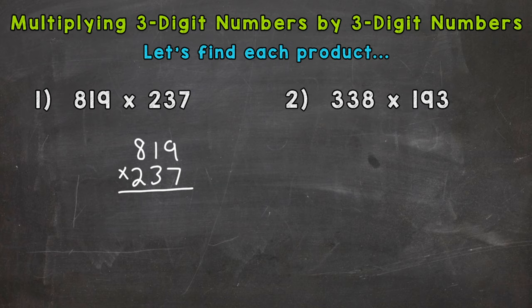We're going to do 7 times 819, 30 times 819, and then 200 times 819, add all of those up, and that will give us our final answer. I said 30 because that 3 in 237 is in the tens place, and I said 200 because that 2 has a value of 200 in the hundreds place.